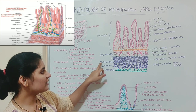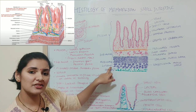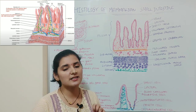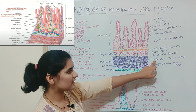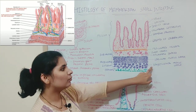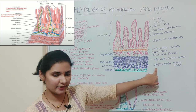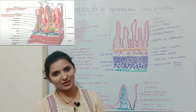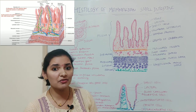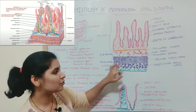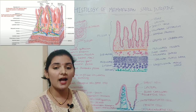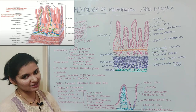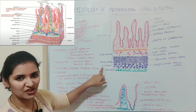Deep to serosa is muscularis externa. Muscularis externa is made up of muscle fibers arranged in two layers: the inner circular muscle fiber layer and the outer longitudinal muscle layer. In between these two layers, patches or clusters of ganglia are present, which supply these two muscle layers. That cluster of ganglia is known as Auerbach's plexus, or the myenteric plexus. So that is about muscularis externa.